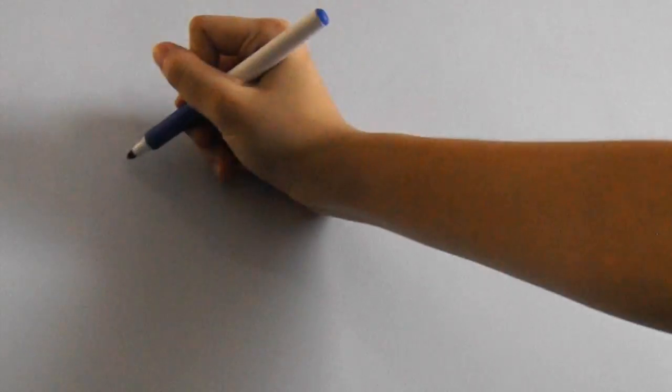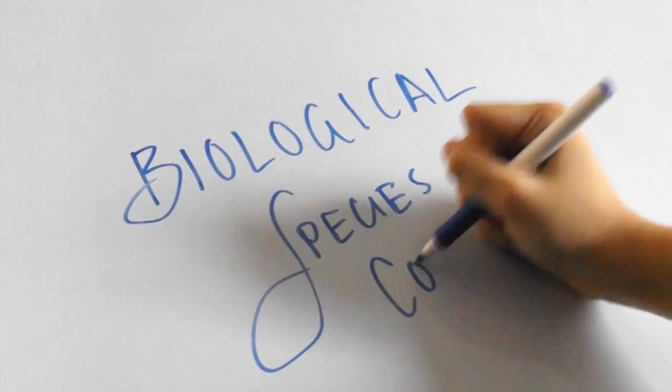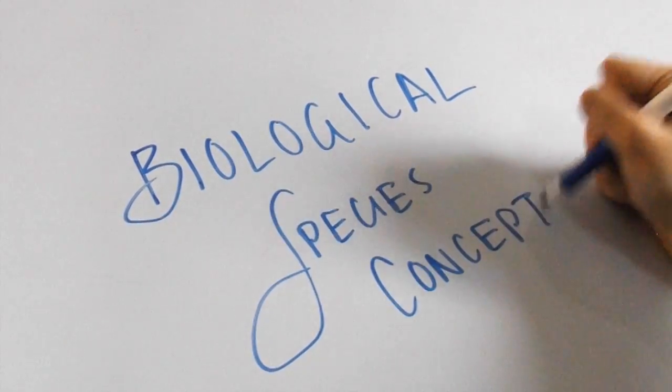And now you know what a species is and the barriers that can be present when mating different species. That's all I've got for the biological species concept, and check out my other AP Biology videos. Thanks for watching!